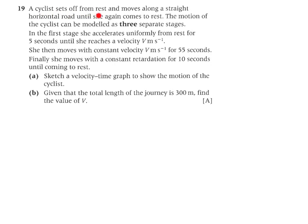It says a cyclist sets off from rest, so its initial velocity is zero, and moves along a straight horizontal road until she again comes to rest. The motion of the cyclist can be modelled as three separate stages.